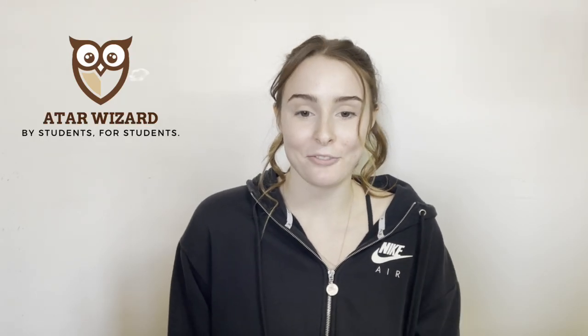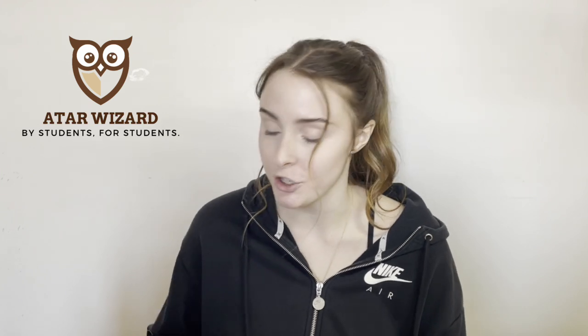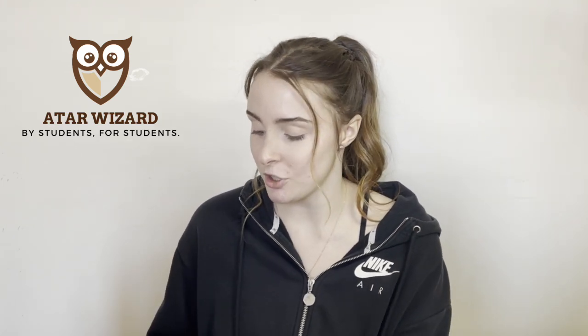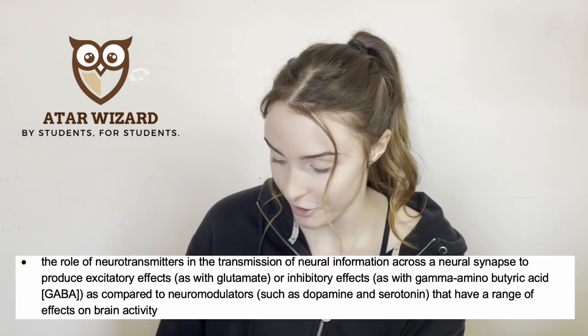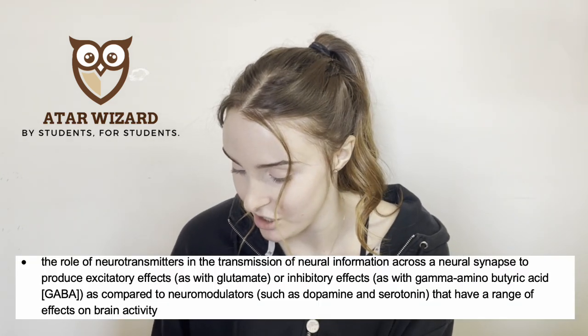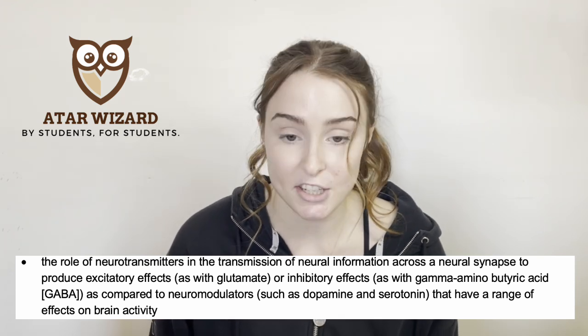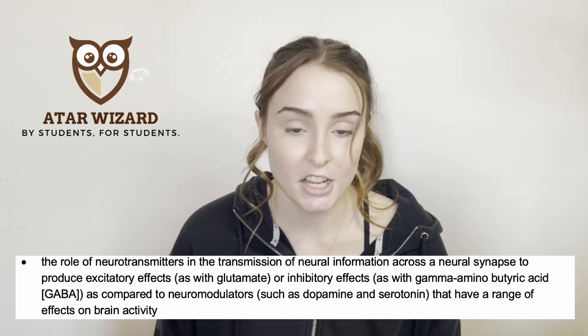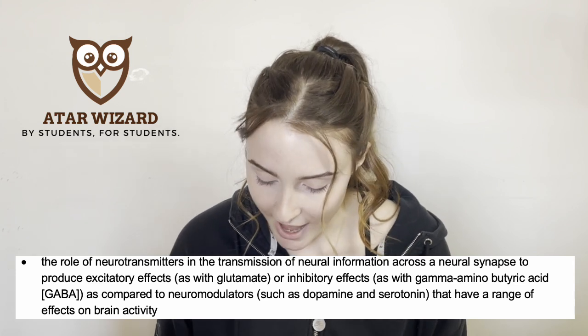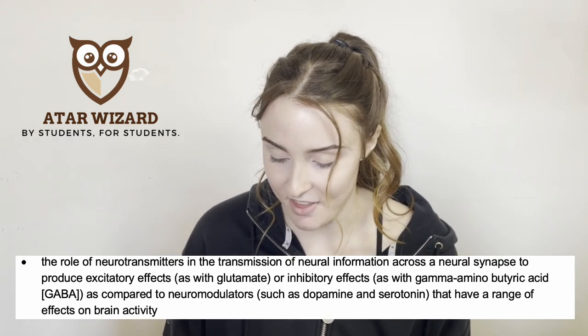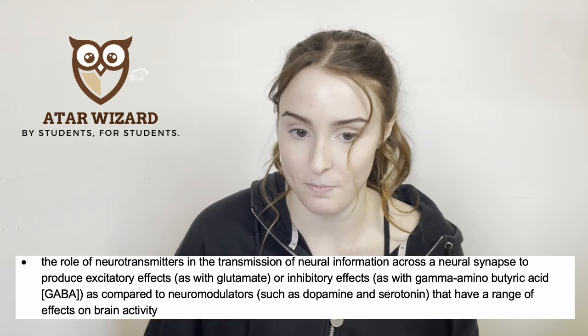Hey everyone, I'm Maddie from ATAL Wizard and today I am going to be going over Unit 3, Area of Study 1, dot point number 2 of the VCE Psychology Curriculum. This dot point reads: the role of neurotransmitters in the transmission of neural information across a neural synapse to produce excitatory effects or inhibitory effects, as compared to neuromodulators that have a range of effects on brain activity.